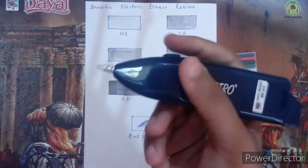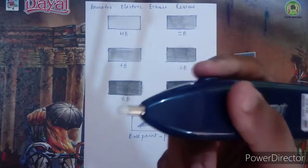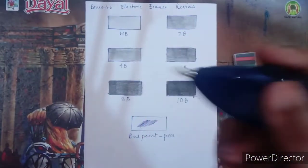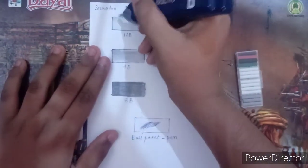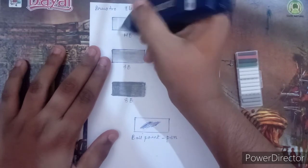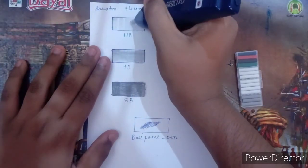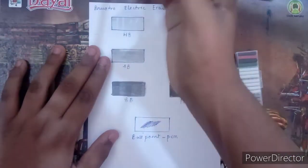Let's test the eraser on some pencil lines. As you can see, the eraser removes the pencil lines very easily without leaving any smudges or dark marks.